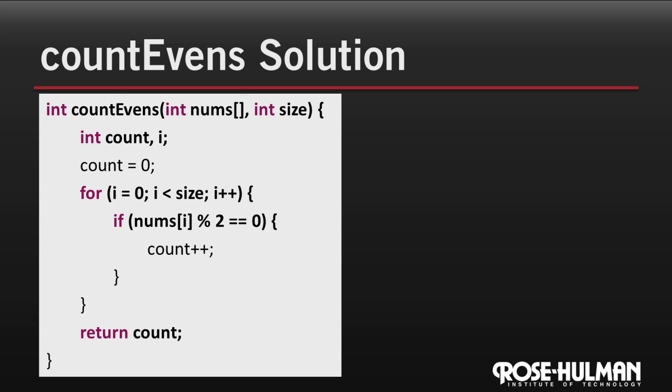In the first line of this function, we declare two variables, count and a loop index i. Then we initialize count to zero, saying we haven't found any even numbers yet. And then in the for loop, we loop from element zero up to one less than the given size of the array. So here we're using the size parameter that was passed in. And for each of those elements, we check if it mod two is equal to zero. And that's a way to test whether it's even. And if it is even, then we increment the count variable. And finally, at the end, we return count.